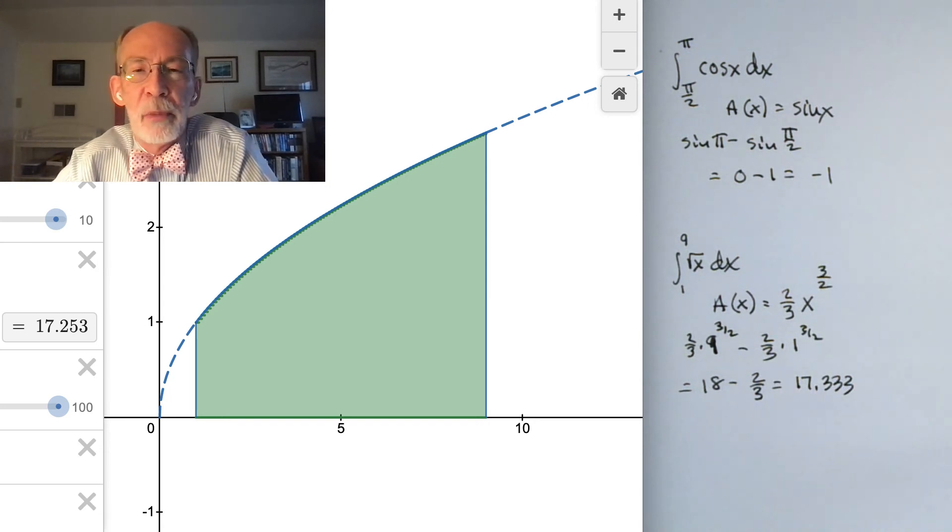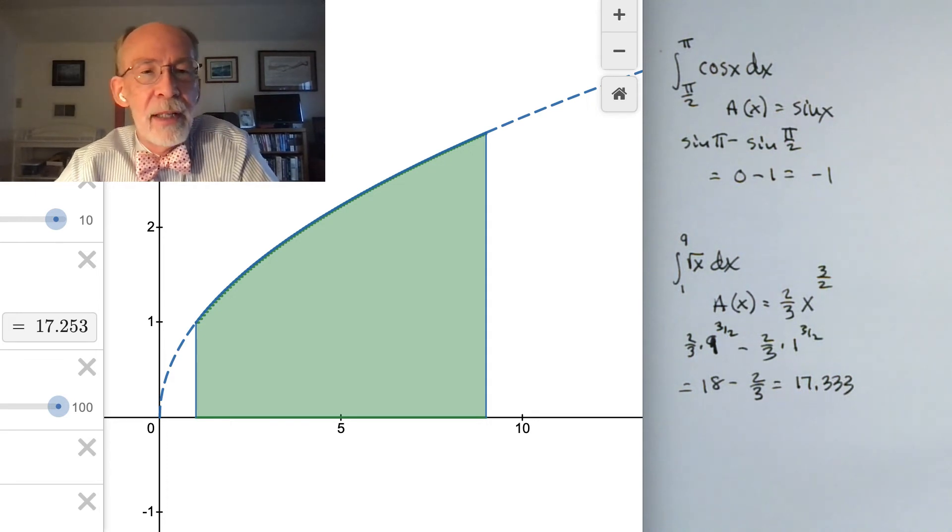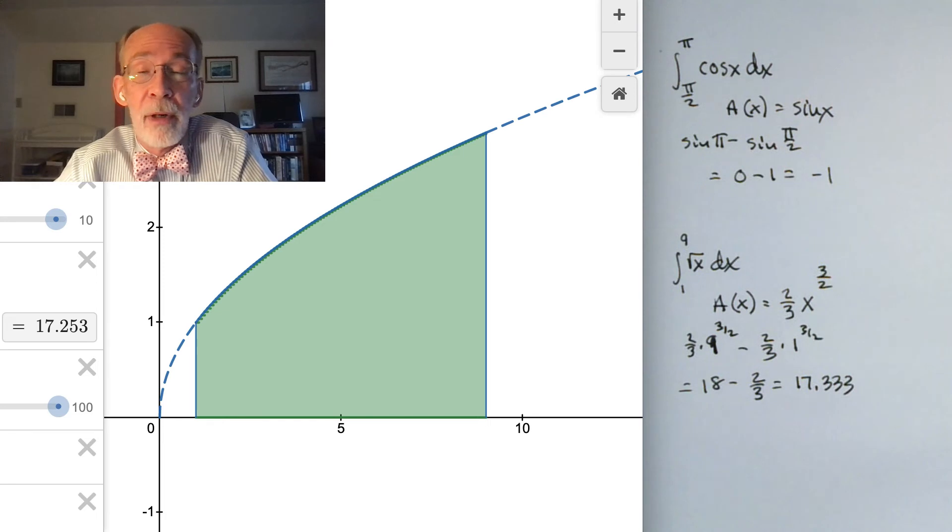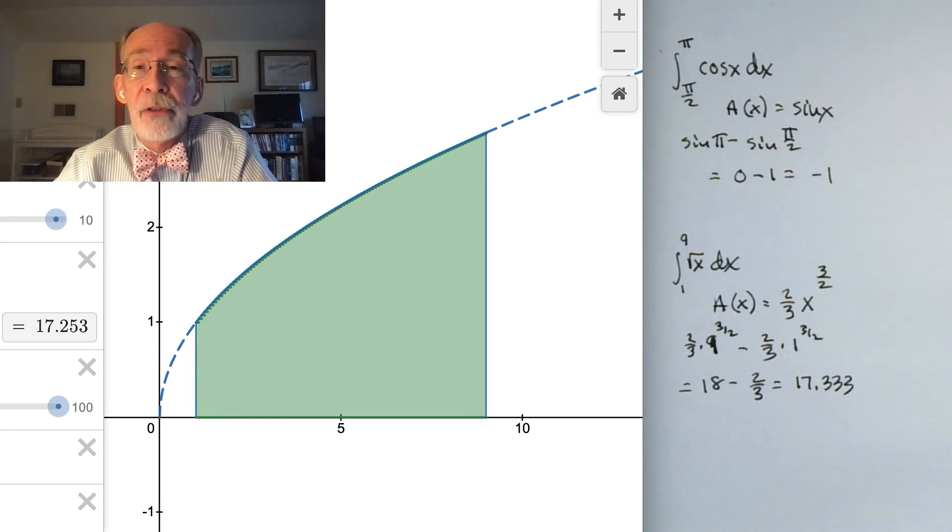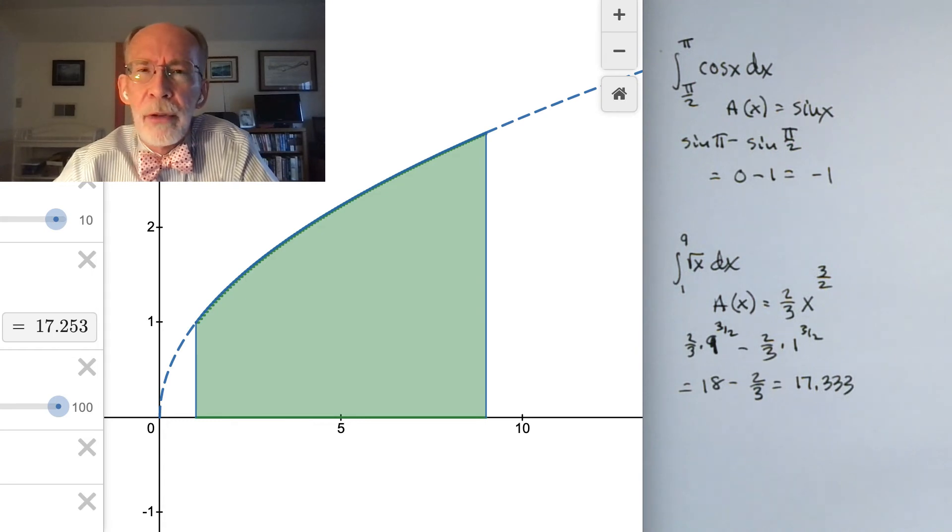Now we're not quite there, right? We're good to the tenths place. We're not good all the way to the hundredths place. But it is suggestive, given, remember, that this 17.253 is an estimate, an approximation. This begins to add to the evidence that suggests that the key to integrating, to evaluating definite integrals, is to sort of reverse differentiate the integrand.